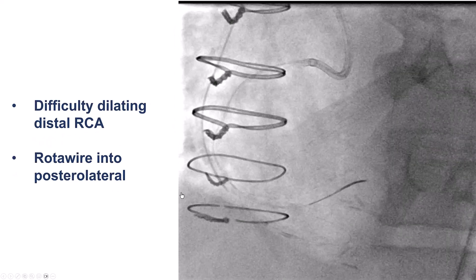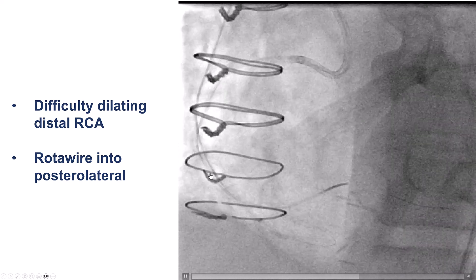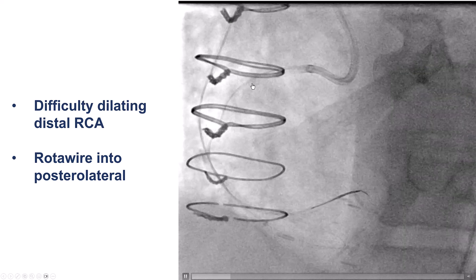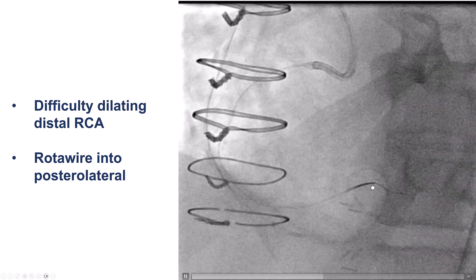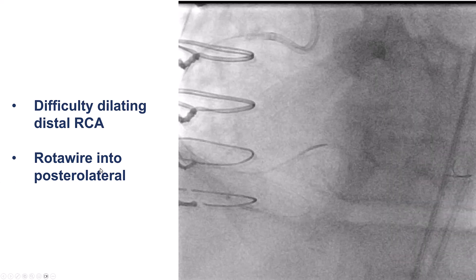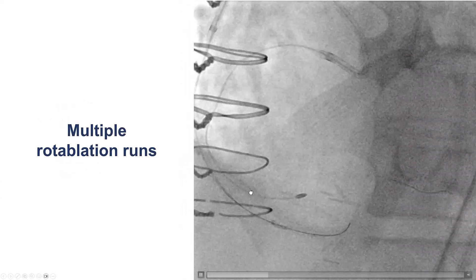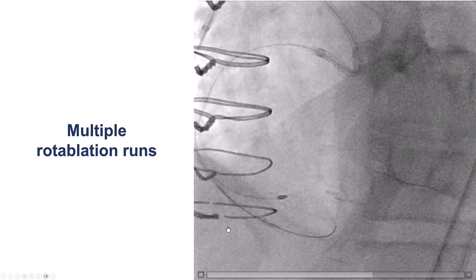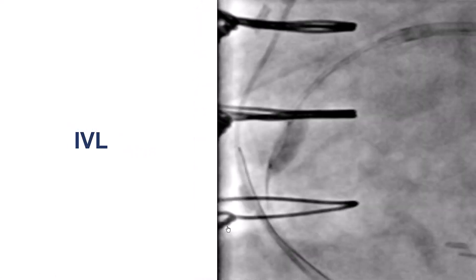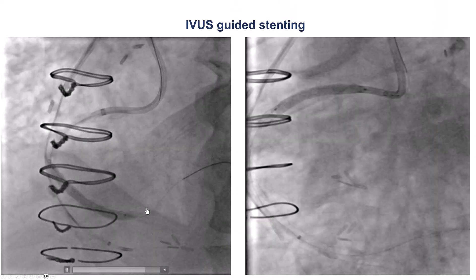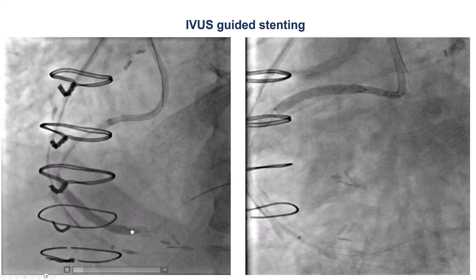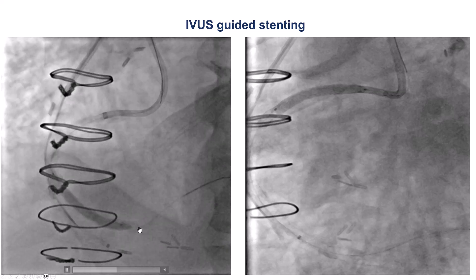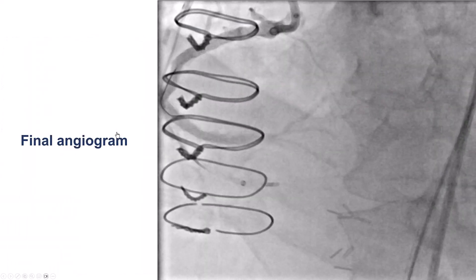We predilated the entire RCA but had a lot of difficulty expanding the distal RCA because of calcium, which is why we performed additional rotational atherectomy. We inserted the Rotawire into the posterolateral and did several rotablation runs of the distal RCA into the right posterolateral. There remained some under-expansion in the mid-right coronary artery, so we performed intravascular lithotripsy. After that, we deployed stents using intravascular ultrasound to guide sizing, from the distal RCA just proximal to the bifurcation all the way to the ostium of the right coronary artery.